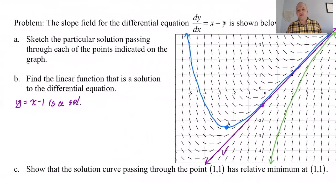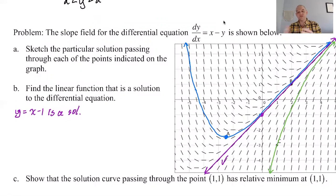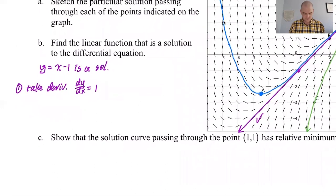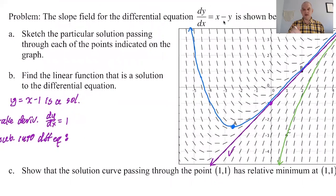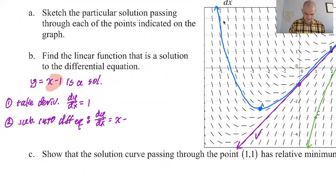How can I prove it's a solution? Taking the derivative of y equals x minus one gives dy/dx equals one. Then substituting into the differential equation dy/dx equals x minus y: dy/dx equals x minus (x minus one), which simplifies to one. Since both give one, it's a solution.